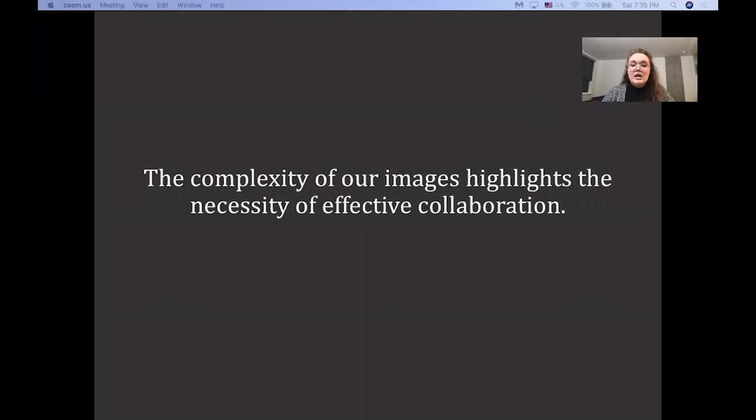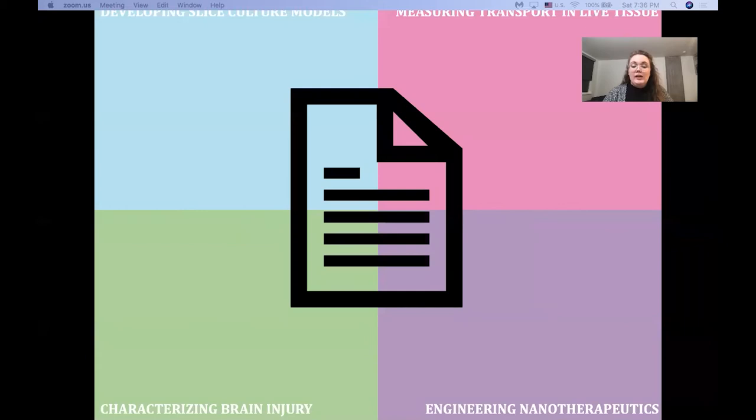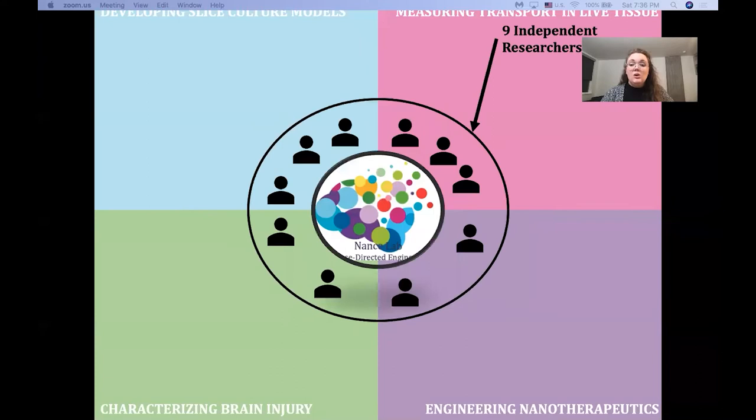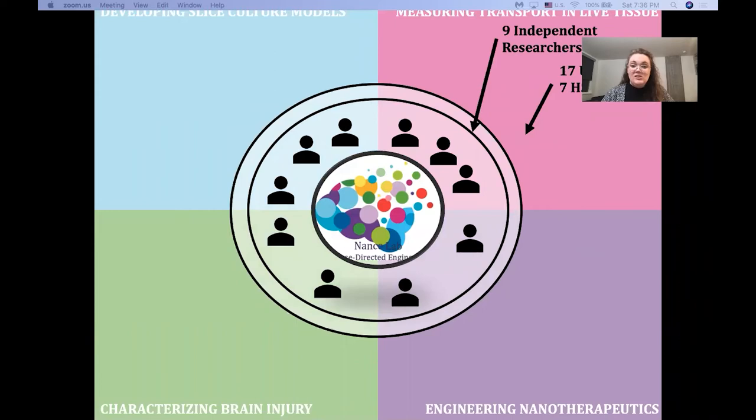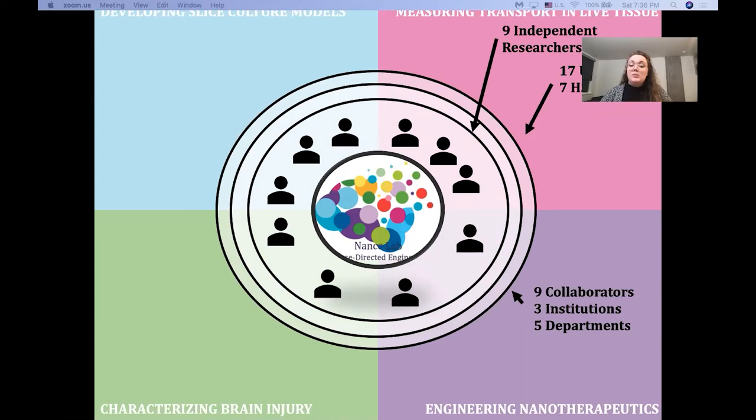And when we're collaborating amongst only the lab in these four huge parts, in order to create a cohesive paper with a hypothesis and results that makes sense, we're actually already using nine independent researchers that have trained seventeen undergrads and seven high schoolers across the period of this paper that have been trained by or used techniques and equipment from nine collaborators across three institutions and five departments.